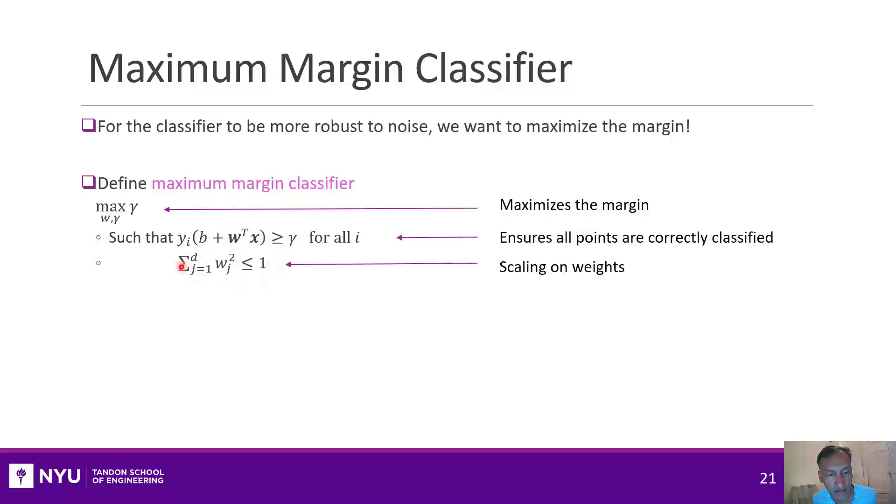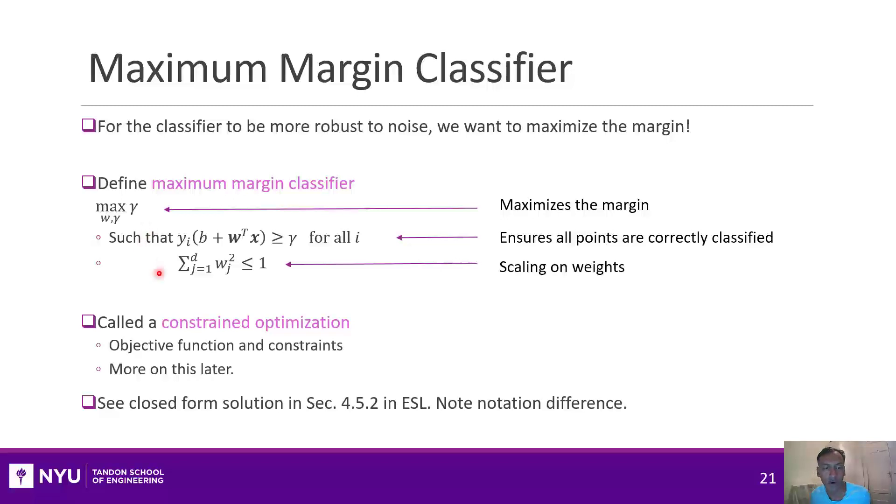Then the second constraint here, make sure that the norm of W is less than 1. And when I impose this, I know that this gamma will be greater than or equal to the margin. So that is how we can get a maximum margin classifier. This is called a constrained optimization because I have an objective subject to constraints. And I'll talk about this momentarily about how we solve these. But let's just assume for now that we could do this.